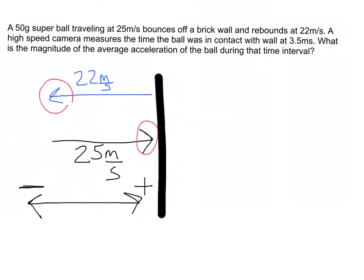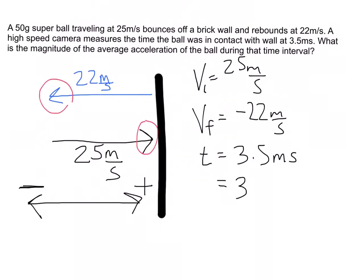The equation that comes to my mind when we have an initial velocity of 25 meters per second, we have a final velocity at minus 22 meters per second, and we've got a time which is equal to 3.5 milliseconds. This time is also written as 3.5 times 10 to the negative 3 seconds. That's what milli means.